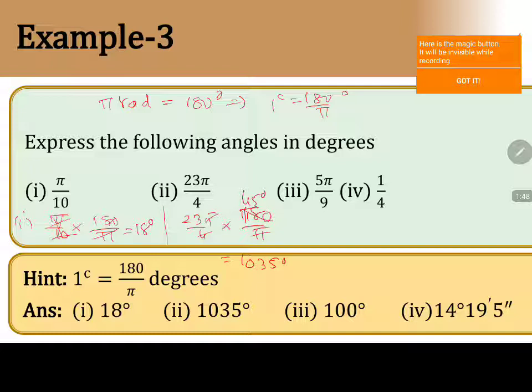Similarly, for the third one, 5 pi by 9 multiplied by 180 by pi. Pi cancels. 9 goes 20 times. 100 degrees.